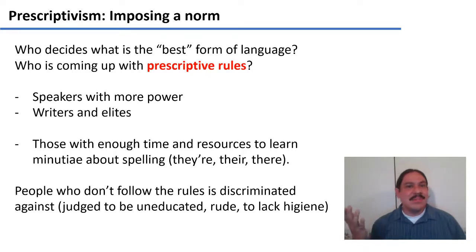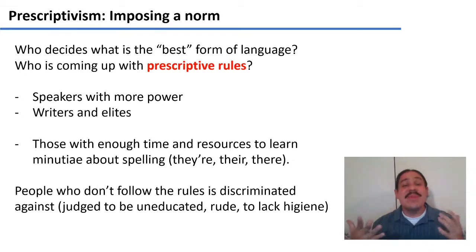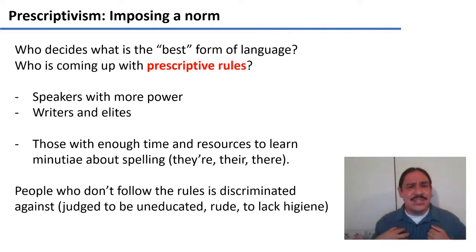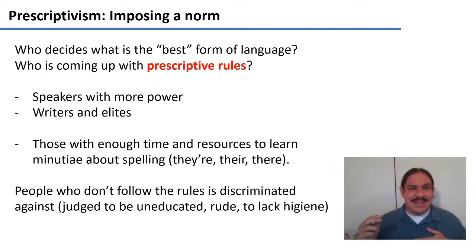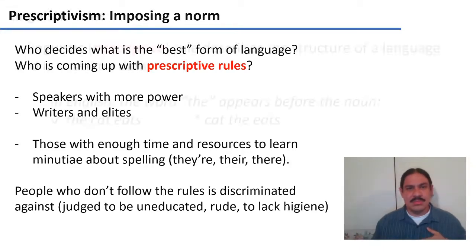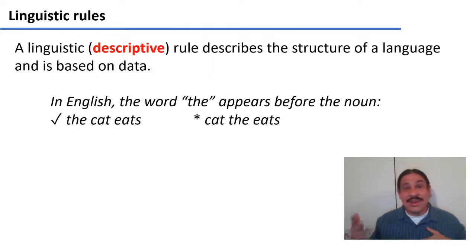The bad thing about these rules is that whoever doesn't follow them is discriminated against. People are judged to be uneducated, rude, or even as having bad hygiene if they don't follow rules like the apostrophes — which, again, sound the same. The only way you memorize which one goes where is because you have the time to do so, to learn this arcane rule.